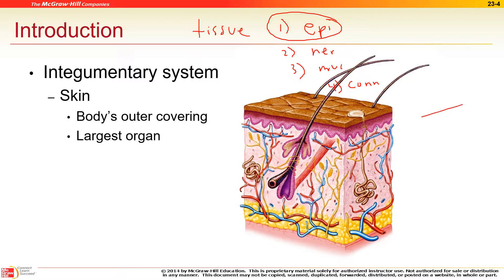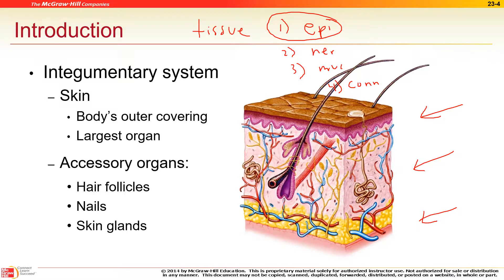The average person's skin weighs about six to eight pounds, making it the largest organ. Within the dermis are the accessory structures: hair, nails, glands, and even your pain and heat sensors.